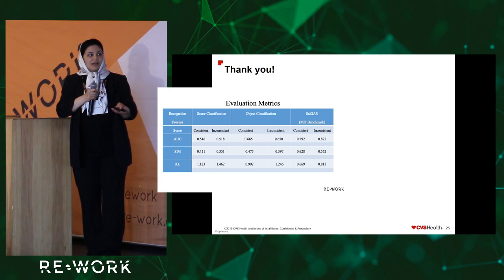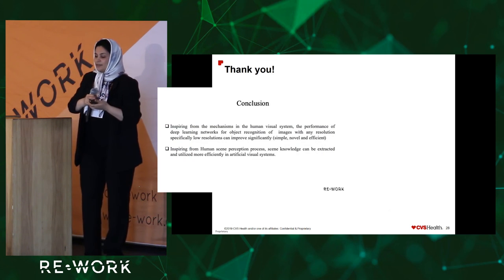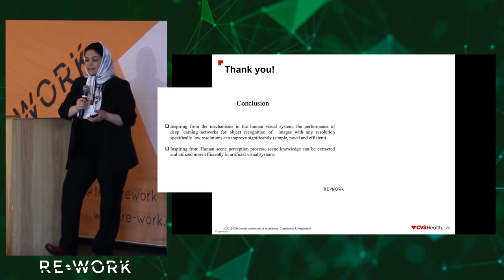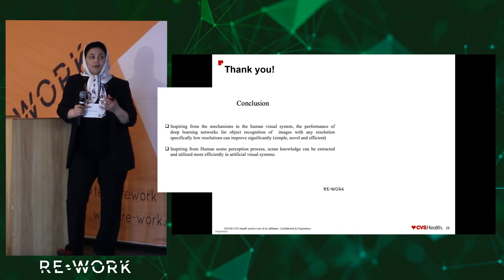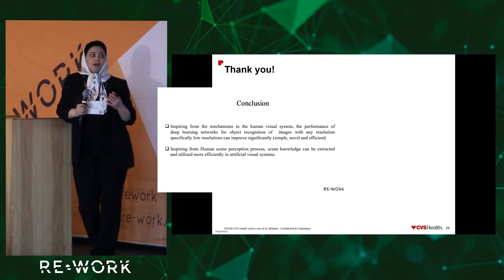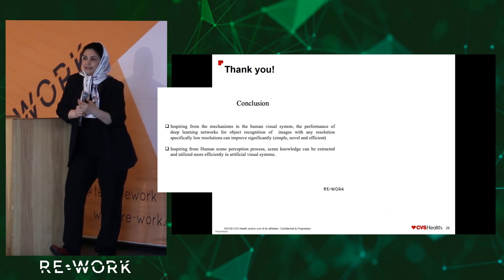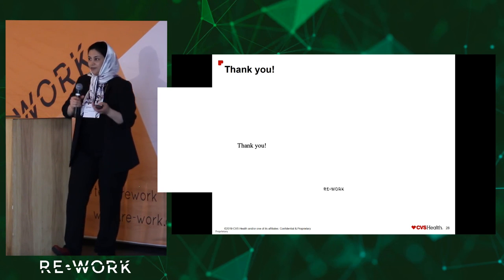In conclusion, inspired by mechanisms in the human visual system, the performance of deep learning networks for object recognition and image perception at any resolution — specifically low resolution — can improve significantly using a simple, novel, and efficient method. Second, inspired by the human scene perception process, scene knowledge can be extracted and utilized more efficiently in terms of global scene properties and scene grammar, making object recognition in deep neural networks more efficient. Thank you so much. May I have your questions?